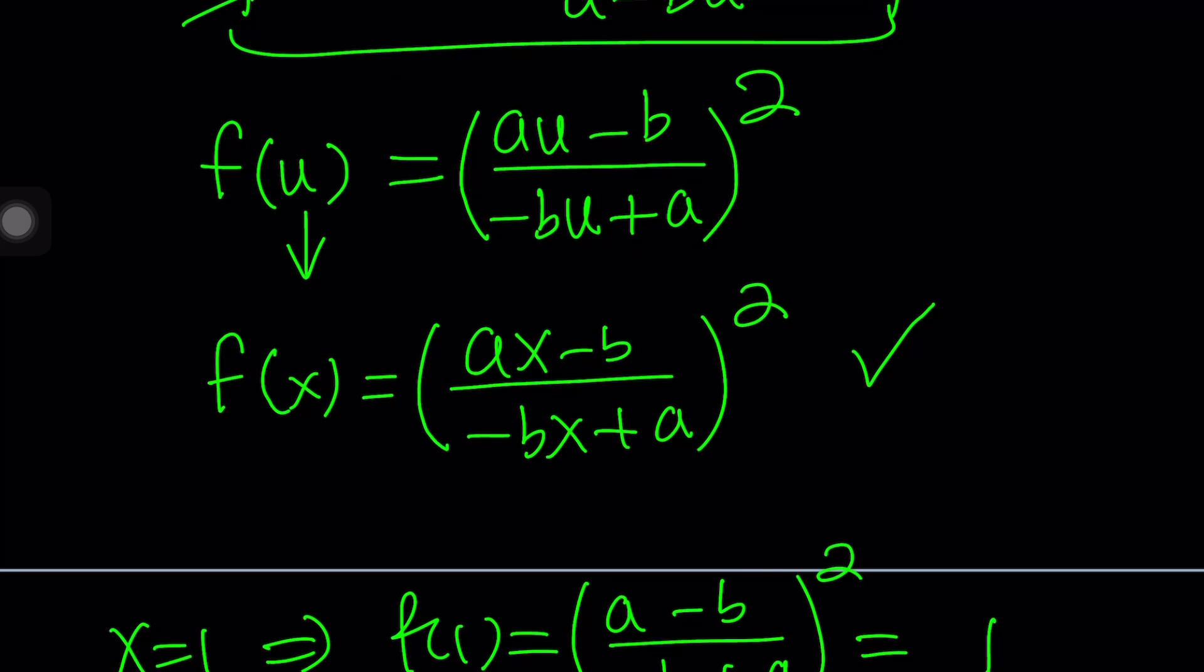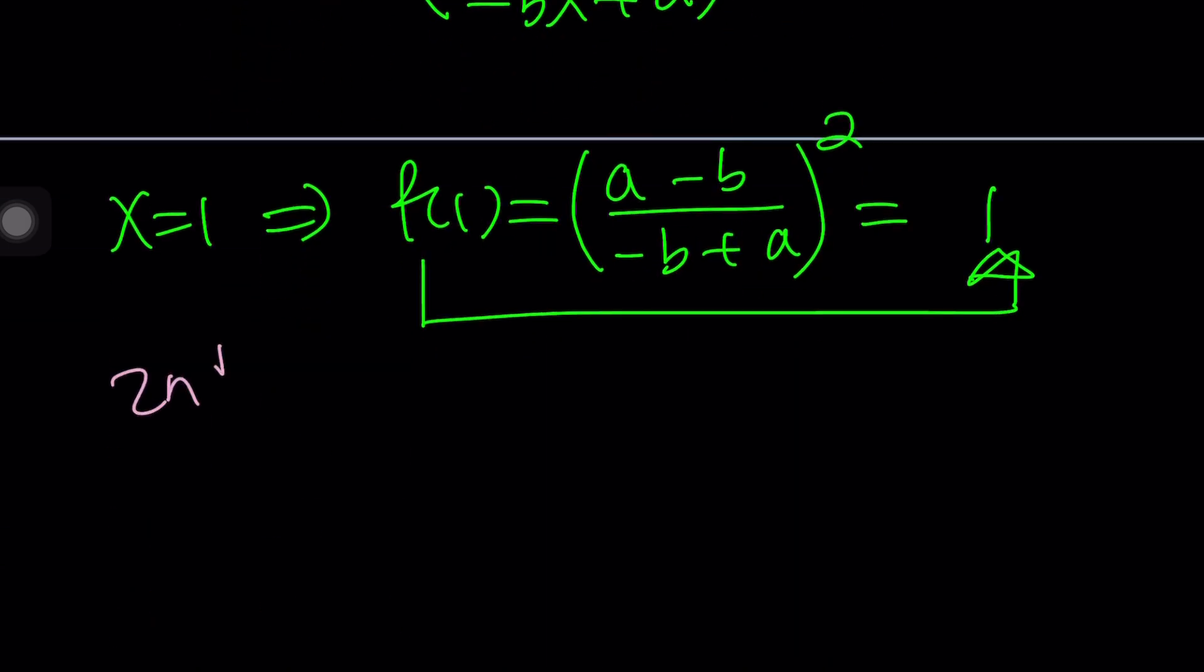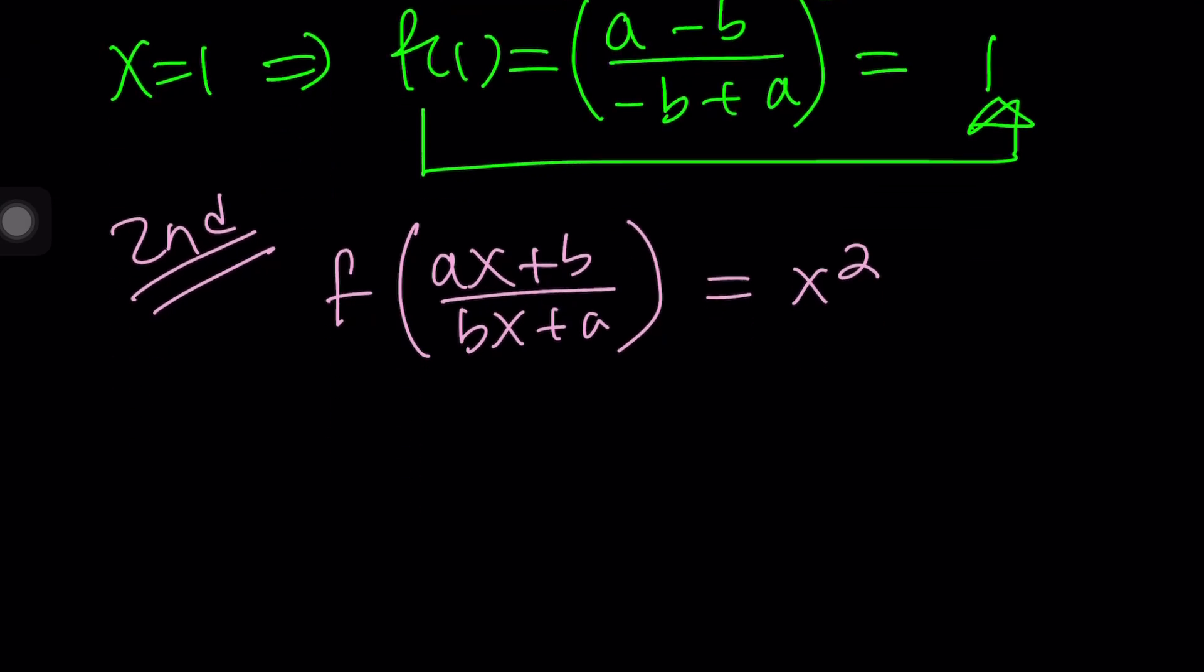Let me show you with the second method how easy that can be. It really depends on the question being asked. If the question is asking for a particular value, sometimes, most of the time, there's a shortcut. That's what the second method is all about. So one more time, we have f of (ax+b)/(bx+a) equals x squared, and I'm trying to find f of 1.